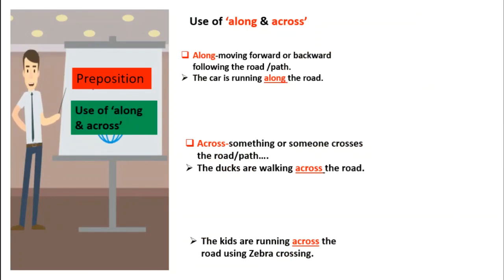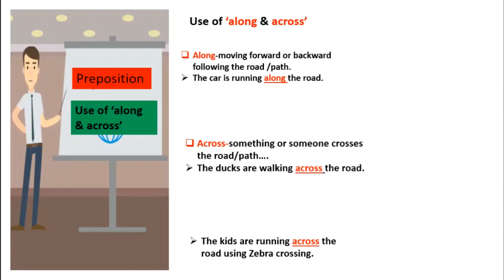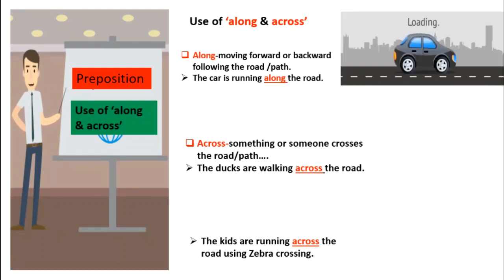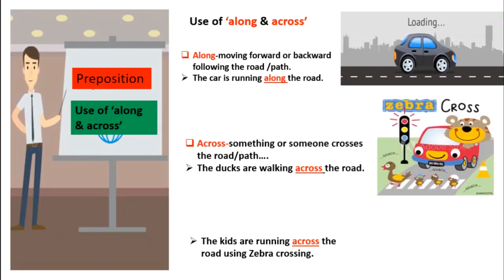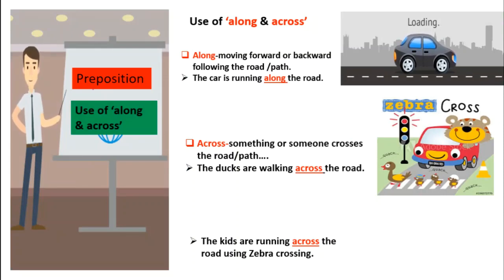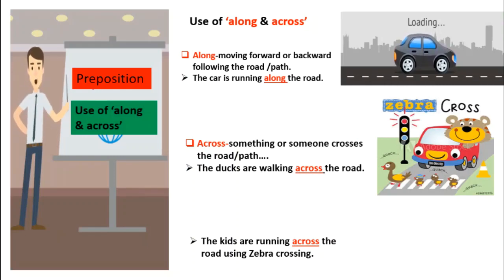Use of 'along' and 'across'. 'Along' is used to mean moving forward or backward following the road or path. Like, the car is running along the road. Now the use of 'across' — when something or someone crosses the road or path, we use 'across'. Like, the ducks are walking across the road.